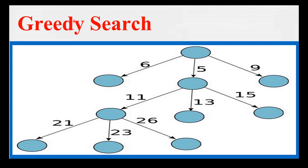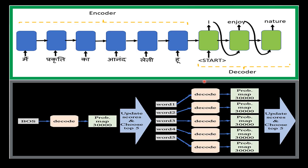Next comes beam search. Beam search is a search algorithm used in natural language processing to find the most likely sequence of words or phrases in a given context. It works by maintaining a set of the top k most likely sequences at each step — called the beam — and expands each sequence by adding the most likely next word.